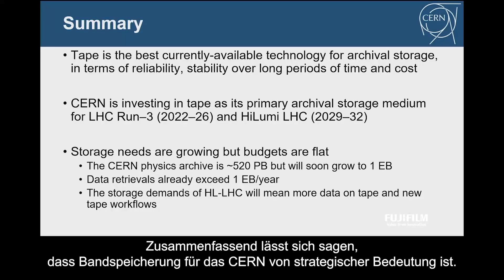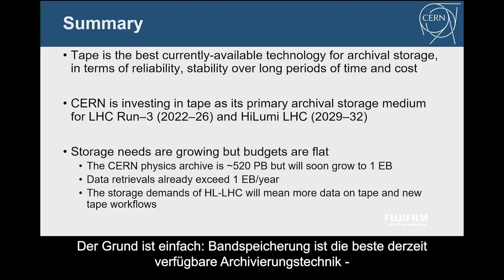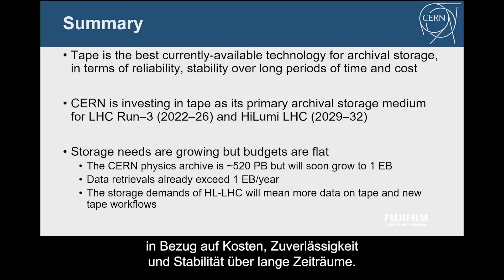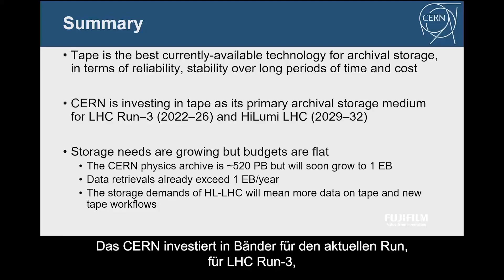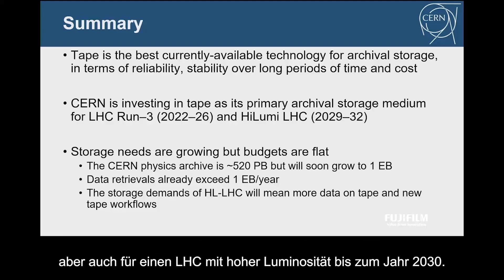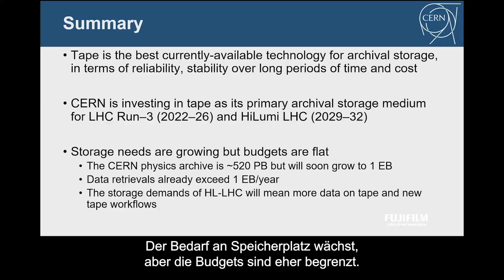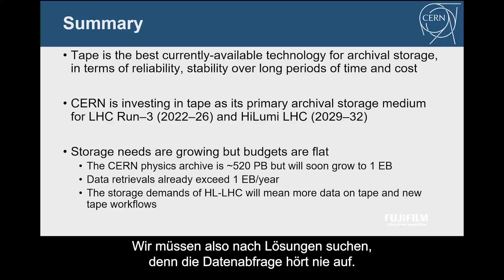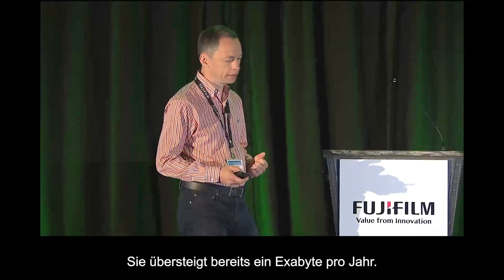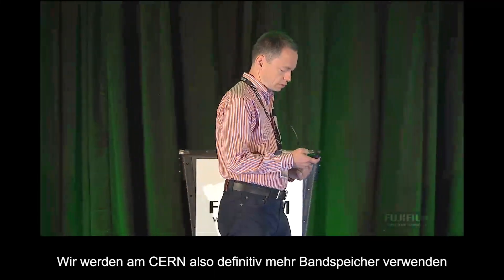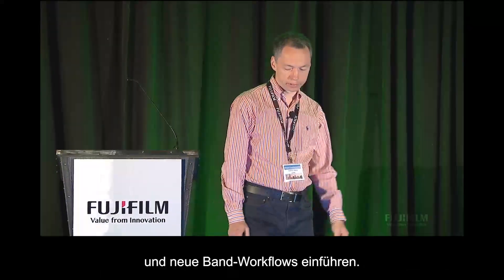In summary, tape is strategic for CERN because it is right now the best currently available archive storage device in terms of cost, reliability, and stability over long-term periods. CERN is investing in tape for the current LHC run three but also for high luminosity LHC up to 2030. Storage needs are growing but the budgets are kind of flat, so we need to look for solutions. Data retrieval never stops — it's already exceeding one exabyte per year — and we are definitely going to use tape more and implement new tape workflows.